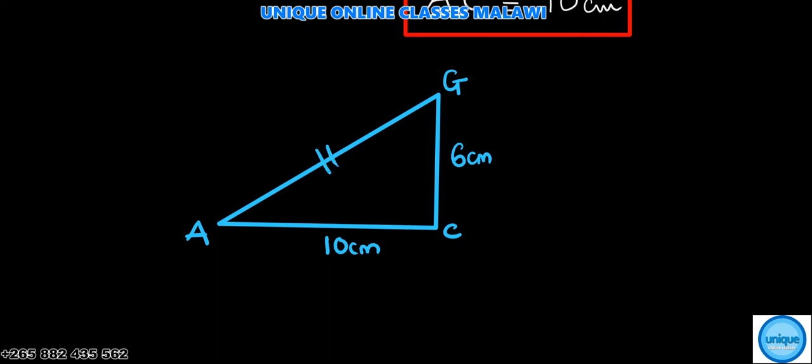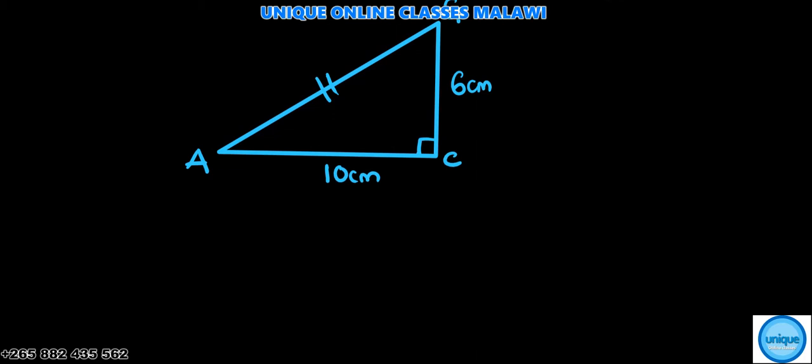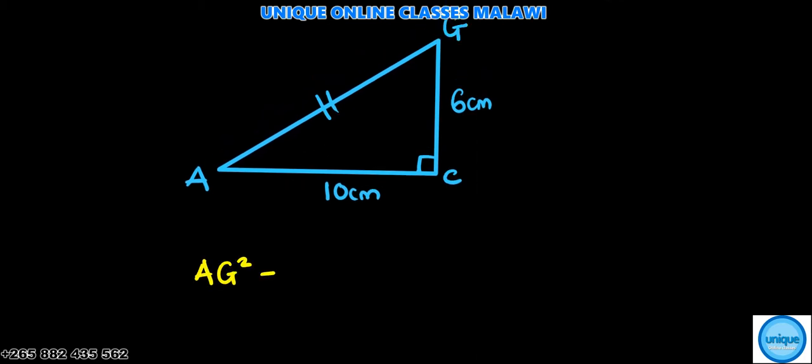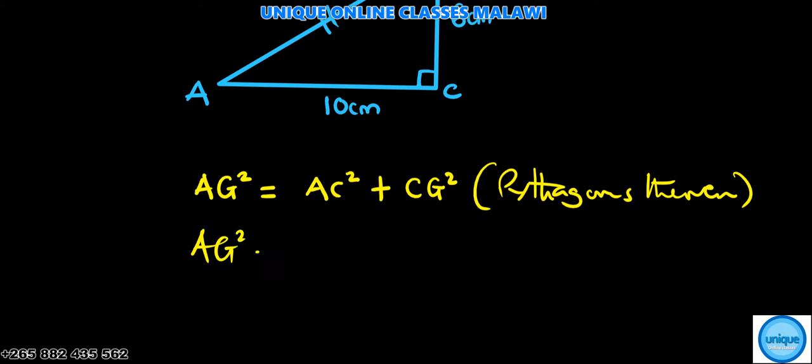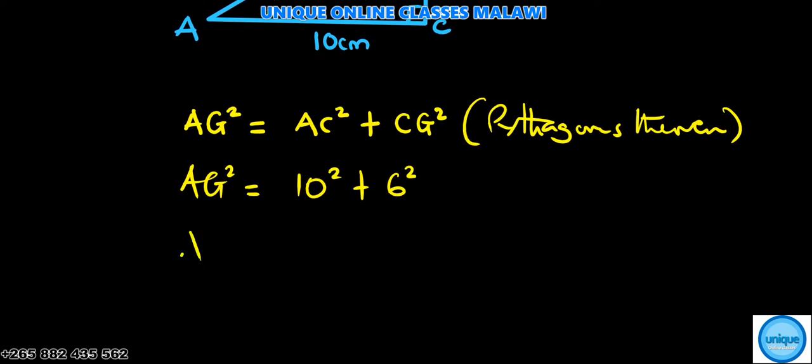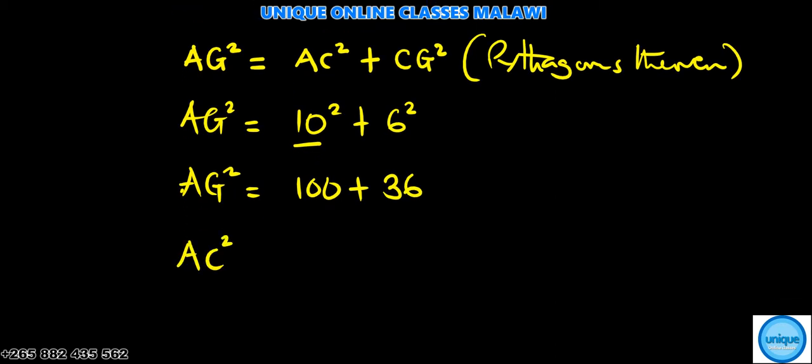AC is 10 centimeters and GC is 6 centimeters. We need to find AG, so we're going to apply Pythagorean theorem. AG squared equals AC squared plus CG squared. AG squared equals 10 squared plus 6 squared, which is 100 plus 36, which means AG squared equals 136.